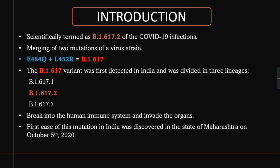This B.1.617.2, nomenclatured as the Delta variant, will break into the human immune system and invade the organs. As it is a triple mutant and not a double mutant, once it enters the human system as a harmful antigen, your immune system will start responding. But because it is a triple mutant, your natural immune system cannot adequately respond, making it very dangerous as it can enter organs and start killing tissues.